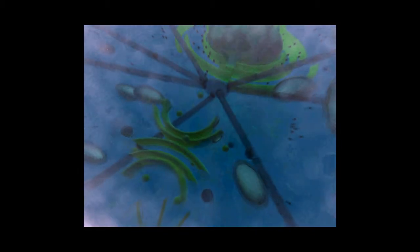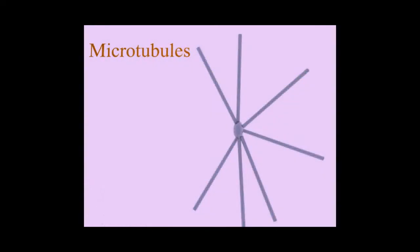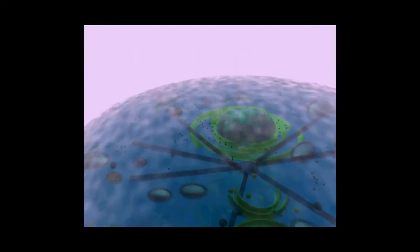The actin filaments and the intermediate filaments are two of the major constituents of the cytoskeleton. The microtubules are a major constituent to the cytoskeleton and also form the mitotic spindle during cell division.